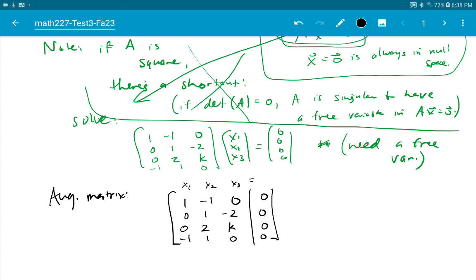Well, it looks like if we do r1 plus r4, that'll help. It'll give me 0, 0, 0, 0. Okay.